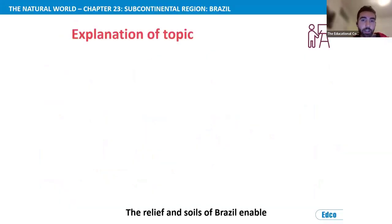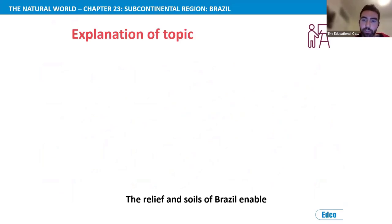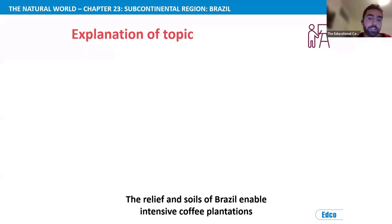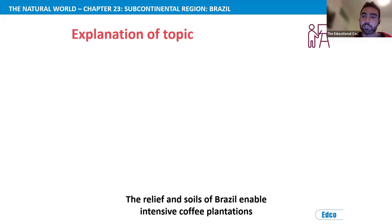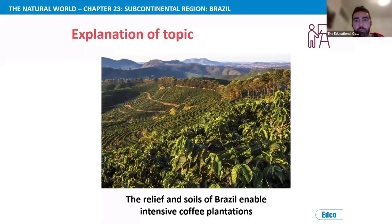Moving into the next topic in our Brazil content, I'll introduce students to how the relief and soils in Brazil enabled intensive coffee plantations to develop along the southeast coastline and into the Brazilian Highlands. I'll put an image of a coffee plantation in the Brazilian Highlands on screen and give students five seconds to take in what that image looks like.